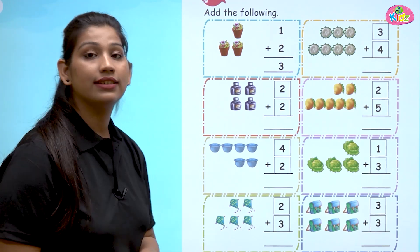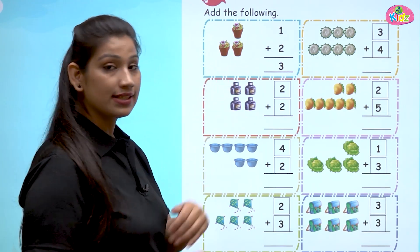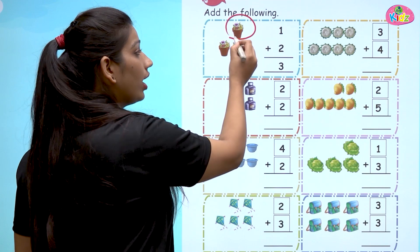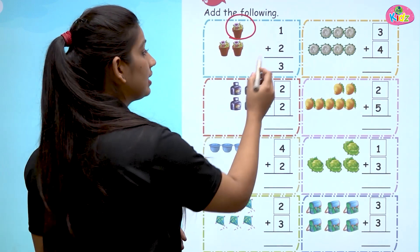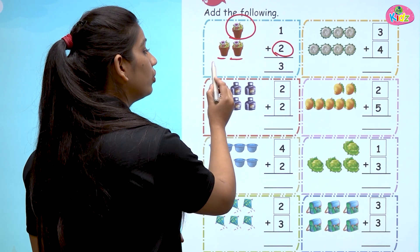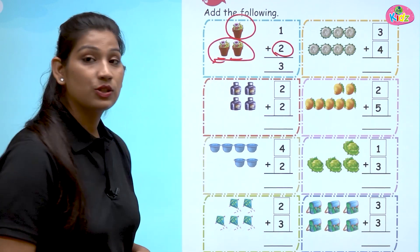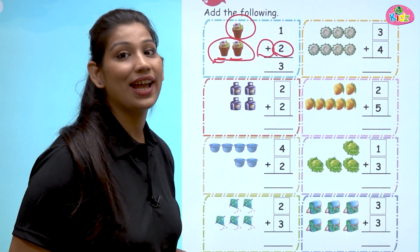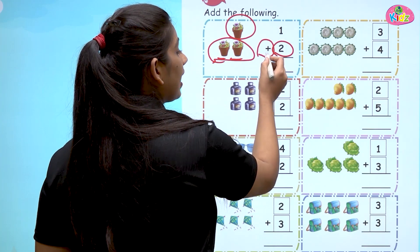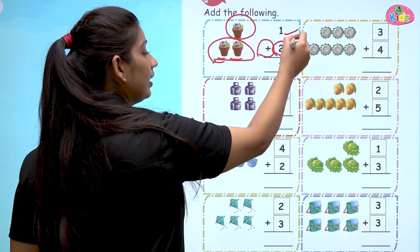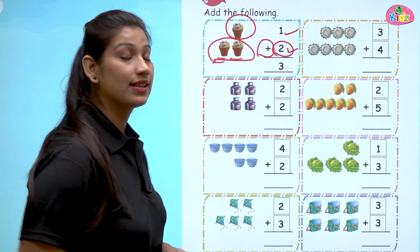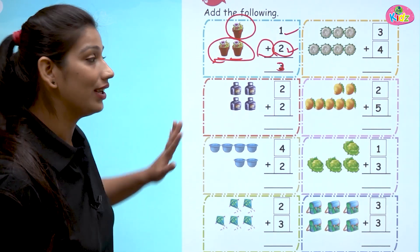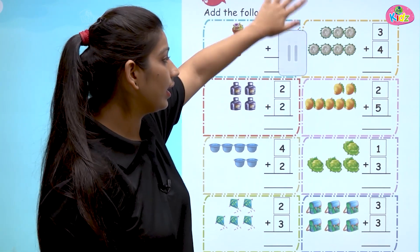Here you can see the numbers and addition sign. You can see here one, and one flower pot. You can see here number two and two flower pots. You can also see the plus sign. This sign tells that you have to plus one and two.